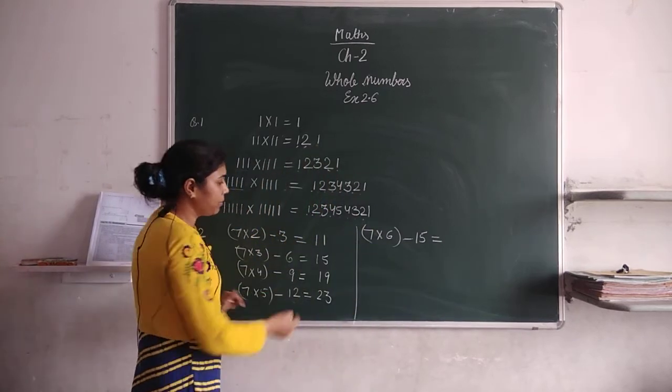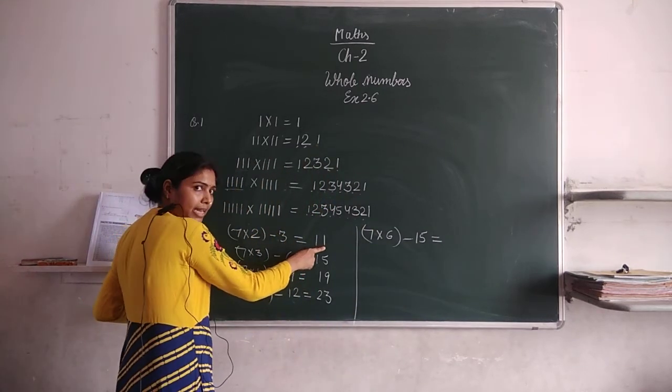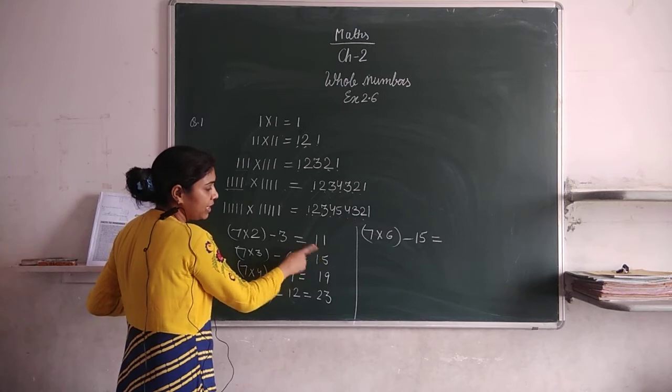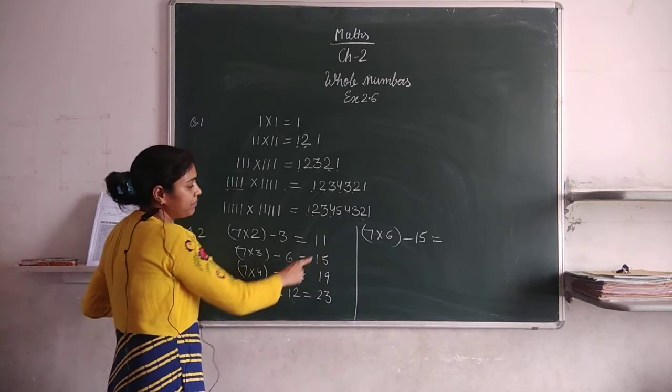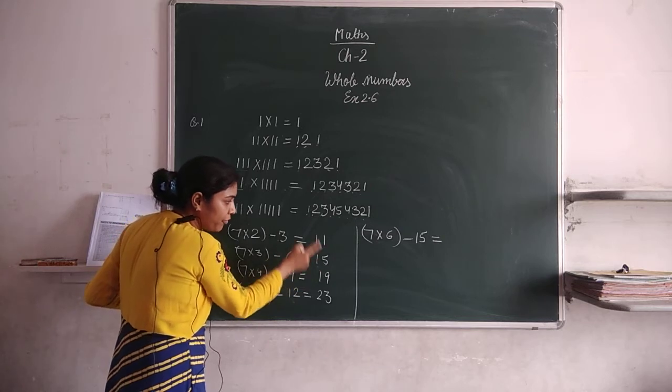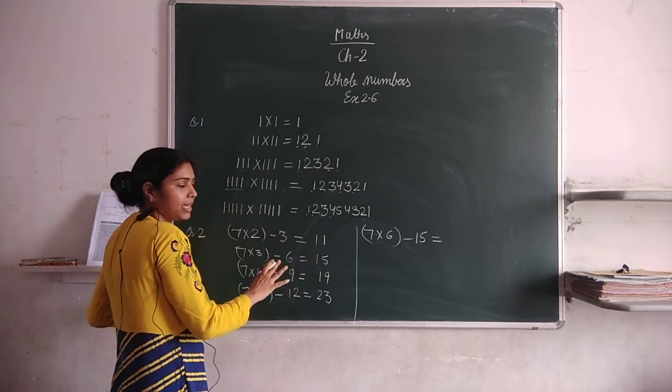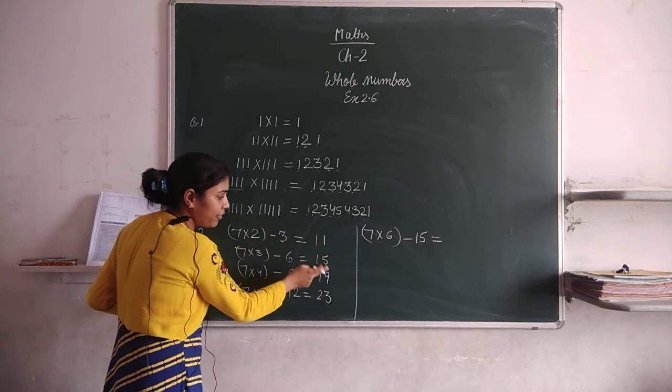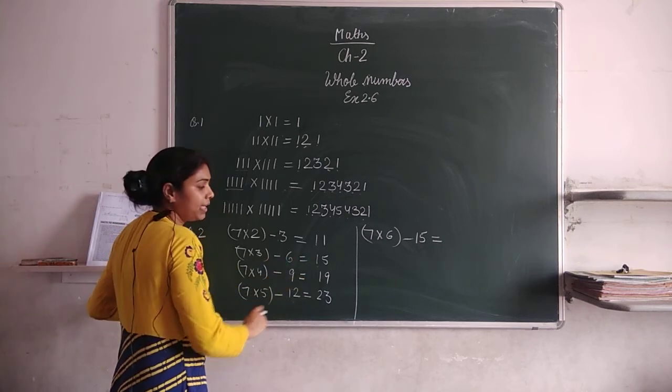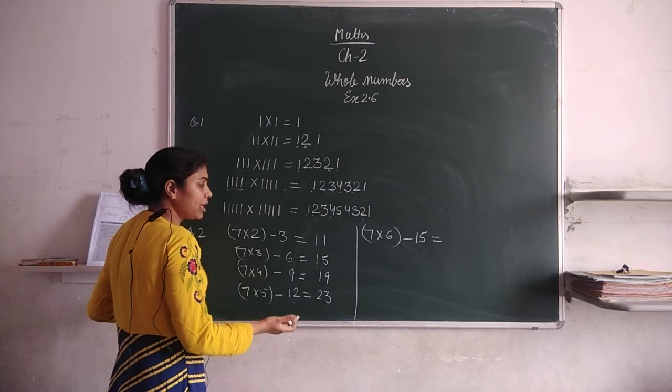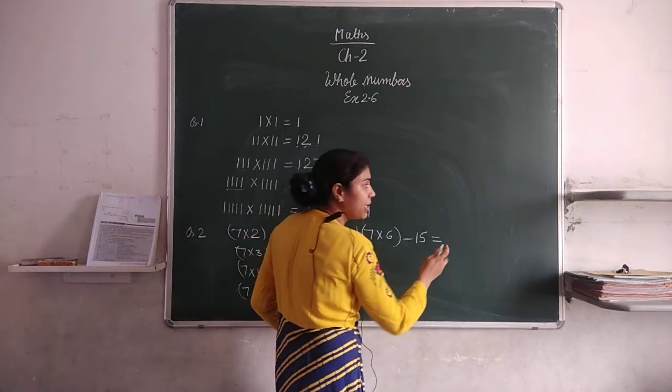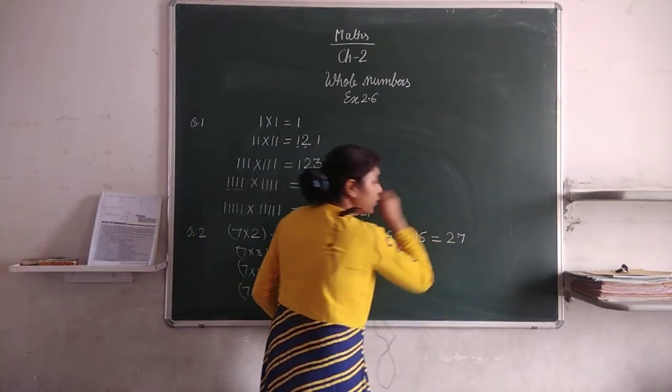Check the answer. First is 11, then is 15. Check the gap between them. What is that gap between them? 11 and 15 have 4 steps gap. Same here, 15 and 19 have 4 gap. Then 19 and 23 have 4 gap. So after 23, what will we have with 4 gap? 27.